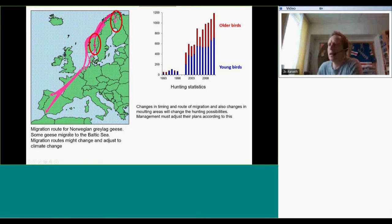This shows you the migration route for Norwegian greylag geese. Some geese migrate to the Baltic Sea, and migration routes might change and adjust to climate change. The Norwegian population overwinter in Denmark, Holland, Belgium, and Spain.